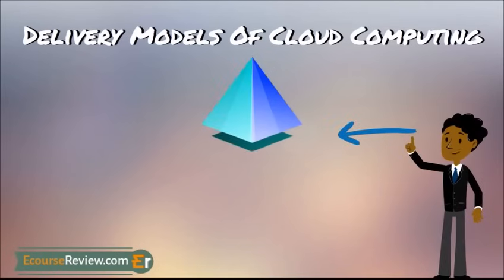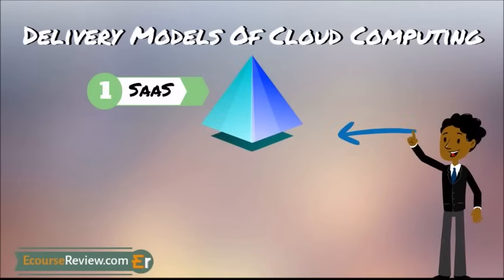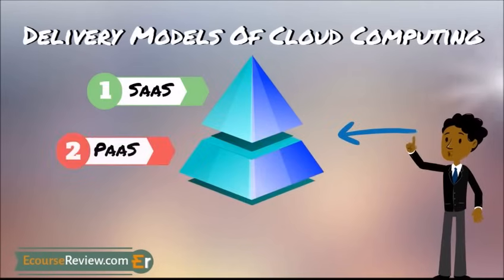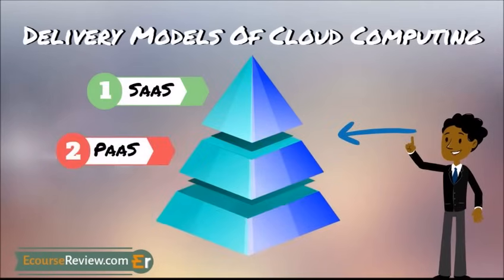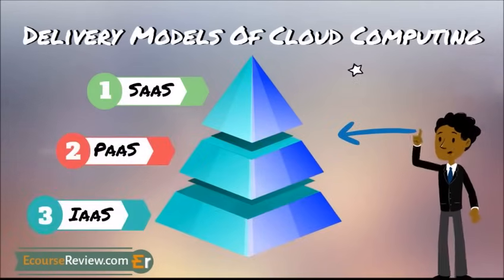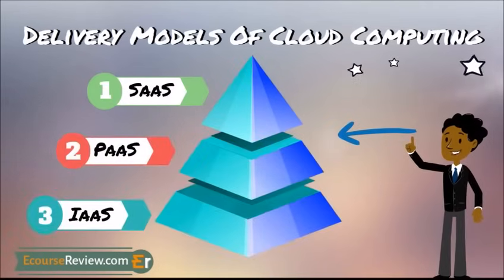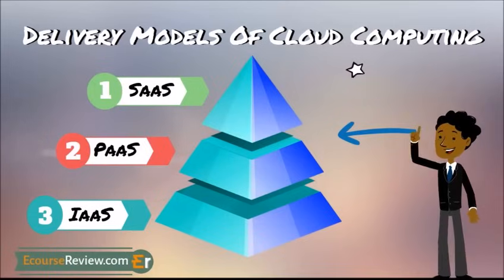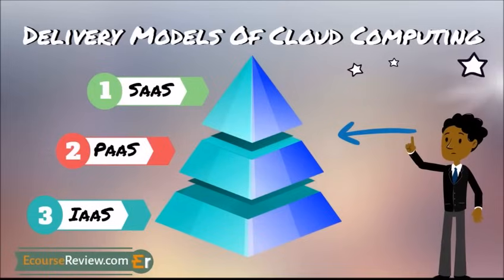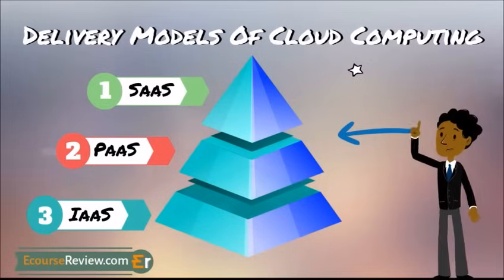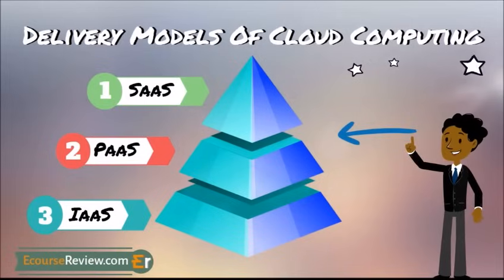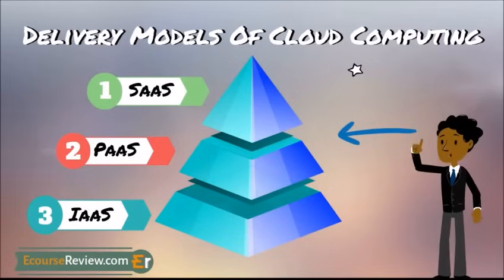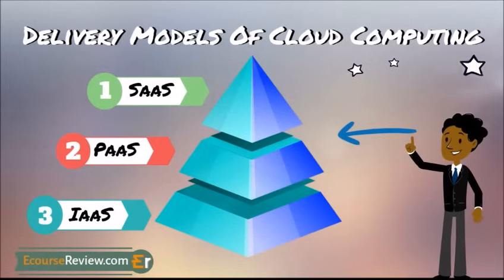There are three delivery models of cloud computing: SaaS, PaaS, and IaaS. Cloud computing offers different services based on these three delivery models. When arranged in a pyramid form, they follow the order of SaaS, PaaS, and IaaS.